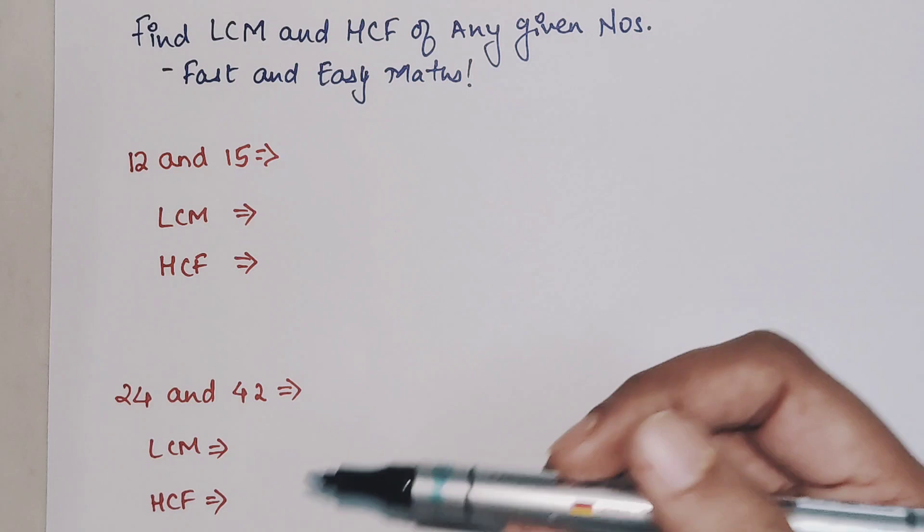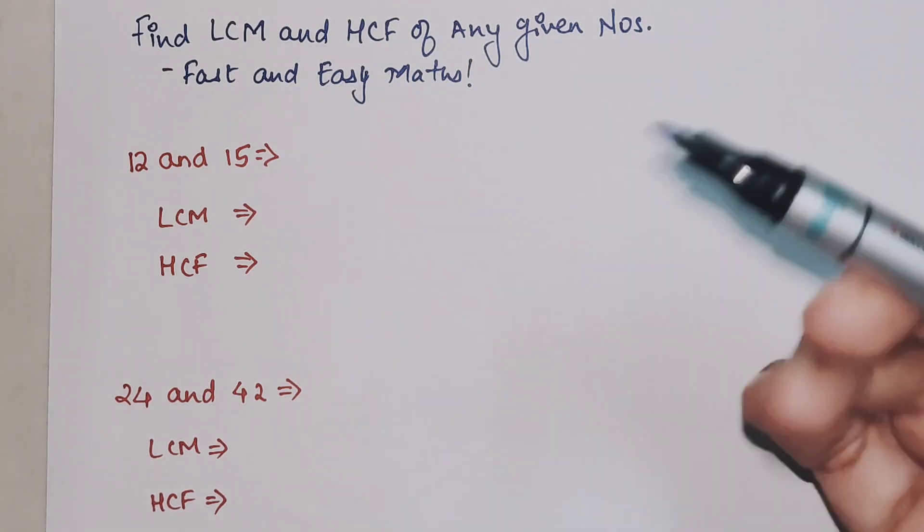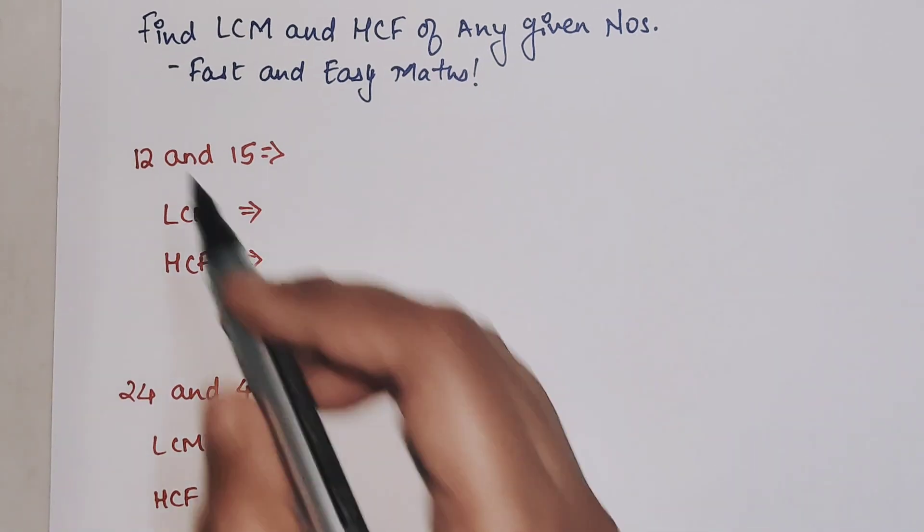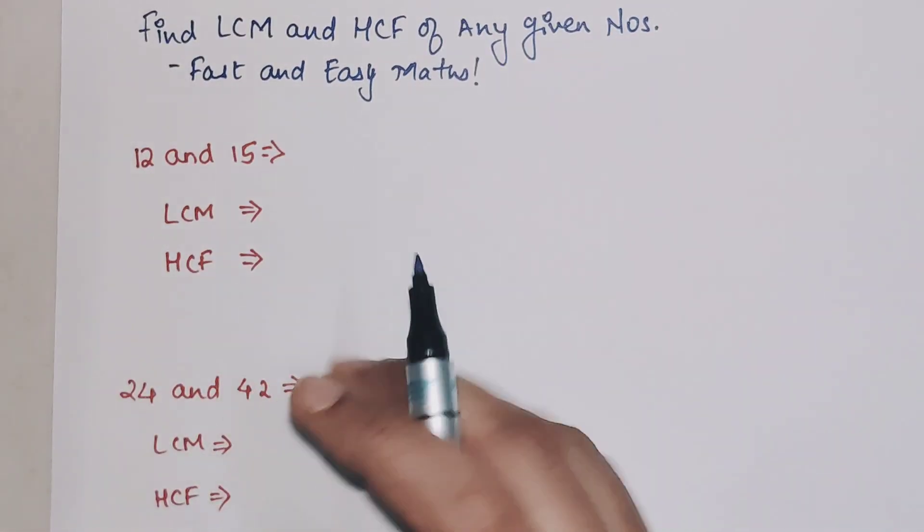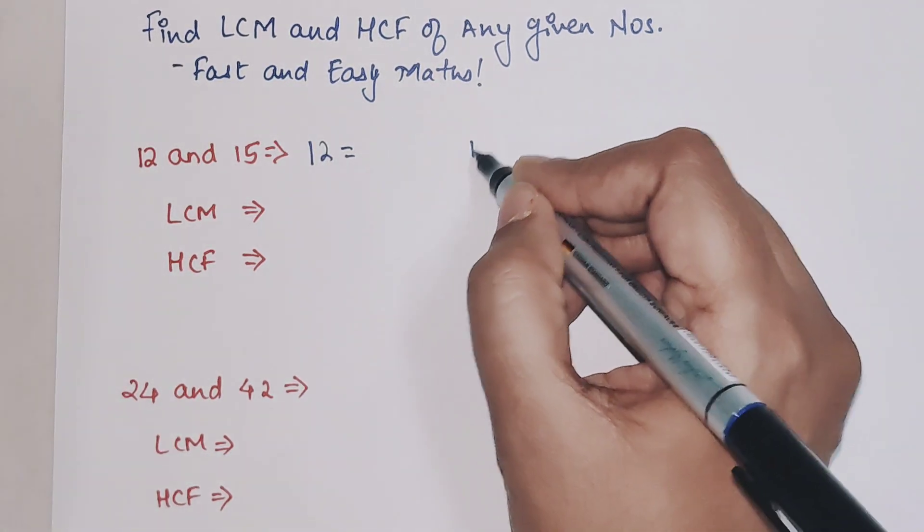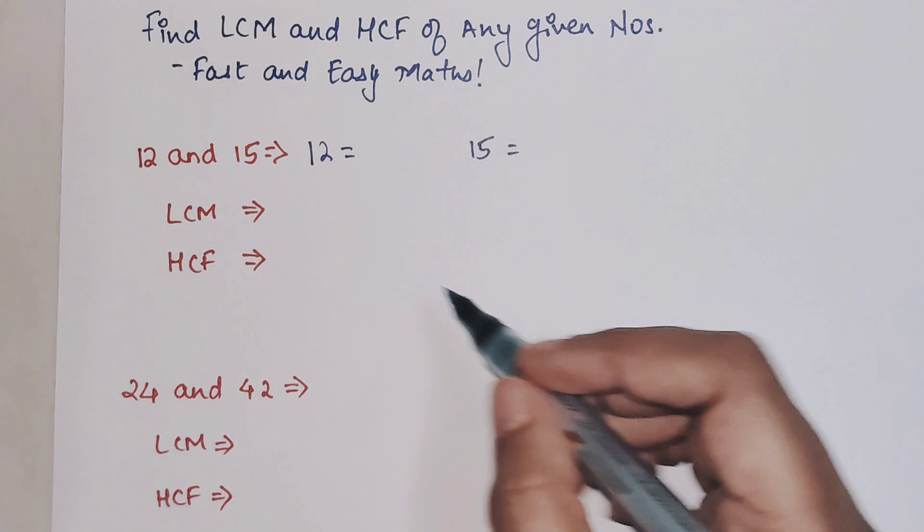So students, today I am going to show you a method to find LCM and HCF of any given numbers in seconds. For this, we'll begin with two numbers and then we will take three numbers as well. So just hang on till the end of this video. Now, very basic, first you need to do the prime factorization of 12 and 15.